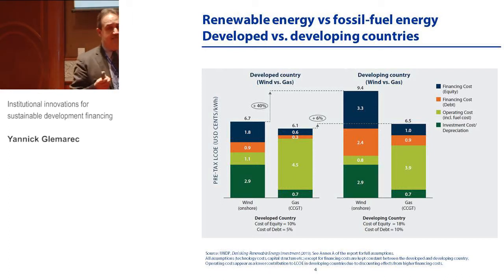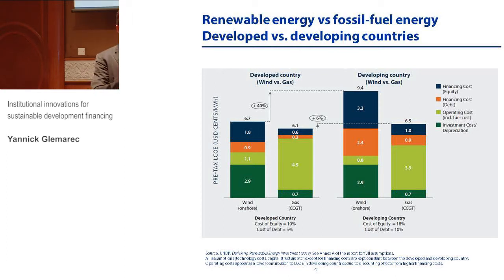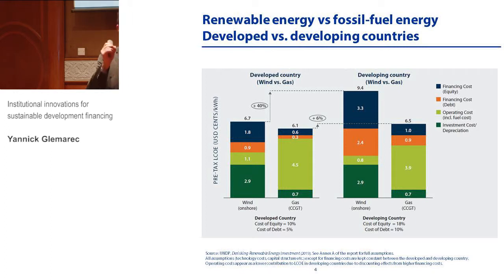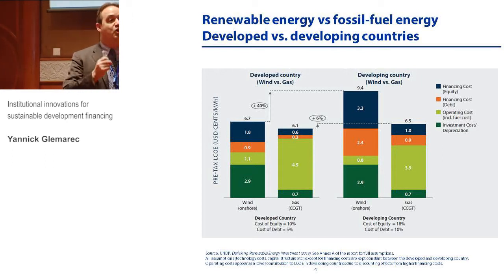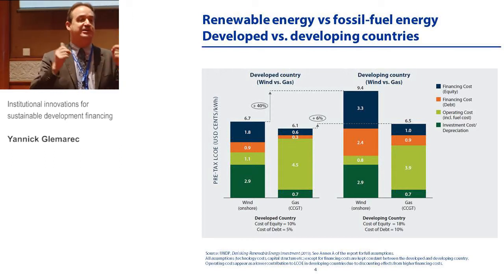When I started my career as an engineer, the main issue with renewable energy was technical performance and cost of the technology. Today, the key issue with renewable energy is the cost of financing the technology. And it's how hydrologists and climatologists suddenly became financiers — because the issue is very much one of having access to long-term, affordable finance.